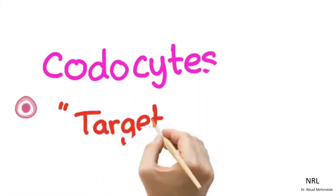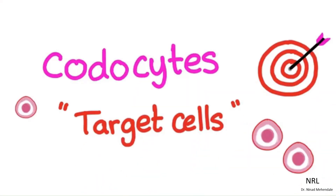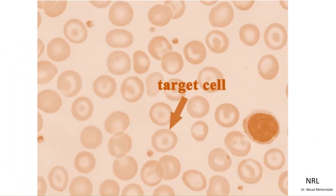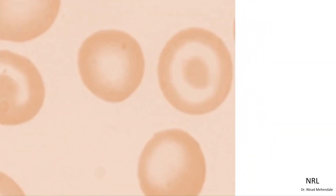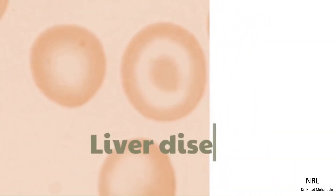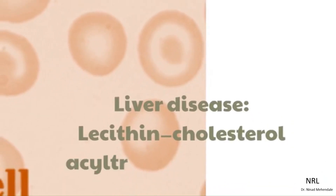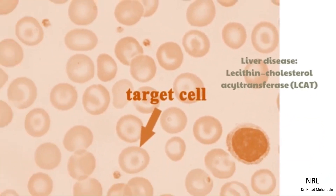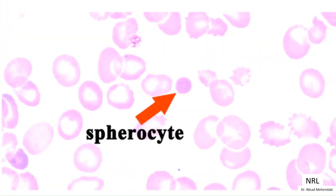Case 7: Codocytes, also known as target cells, are red blood cells that have the appearance of a shooting target with a bullseye. Target cells may appear in association with conditions such as liver disease.